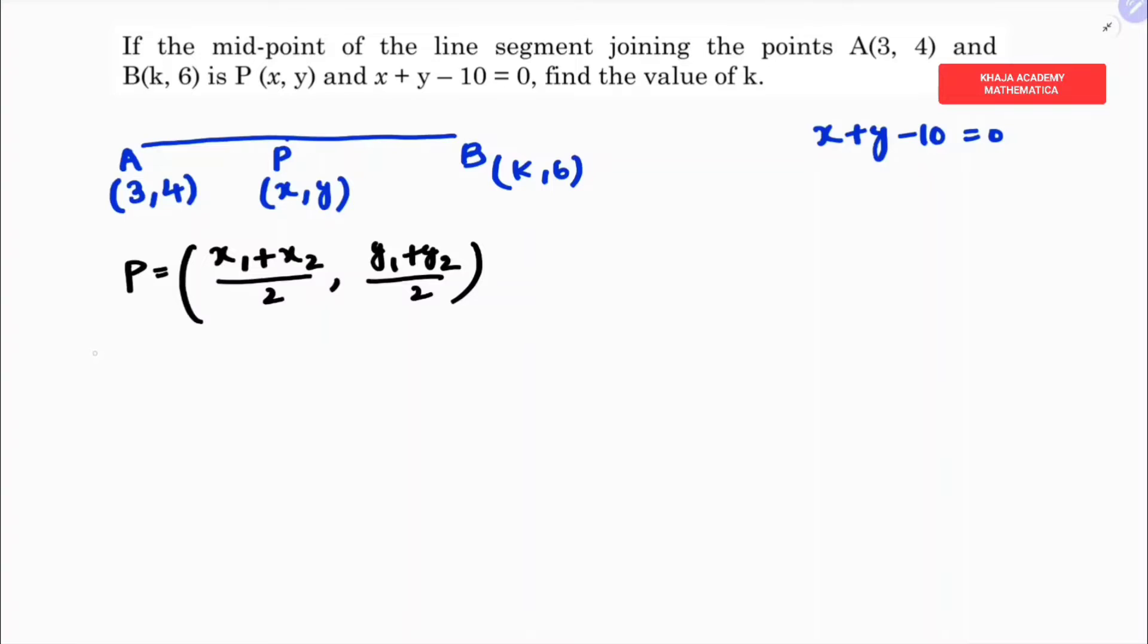The value of P is (x, y). Now see these are x₁, y₁, x₂, y₂. If we substitute the values, x is (3 + k)/2, and y is (4 + 6)/2.